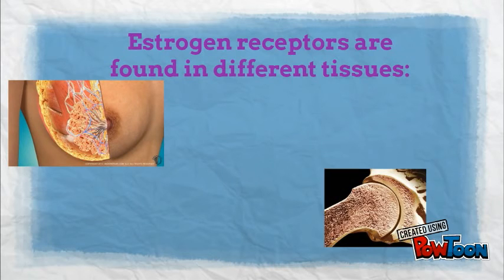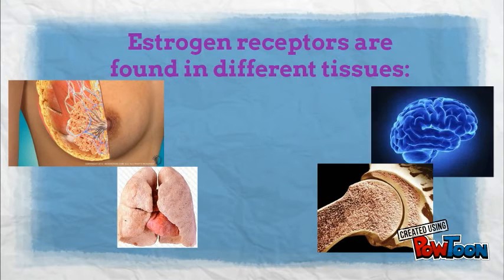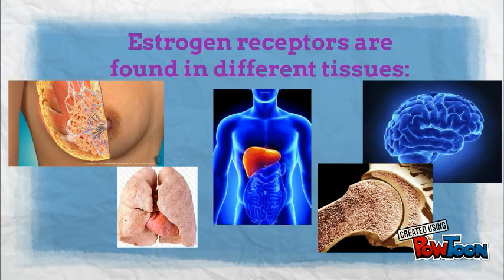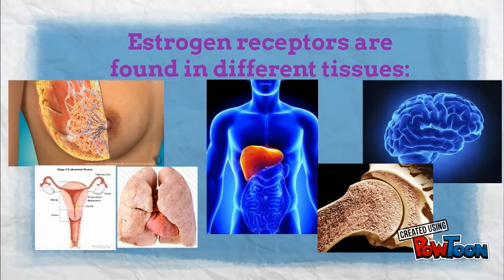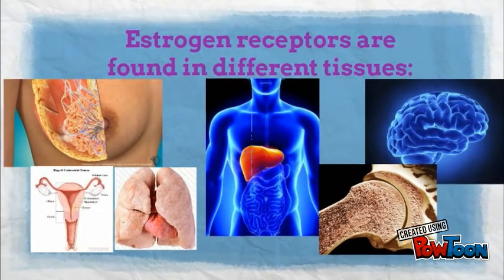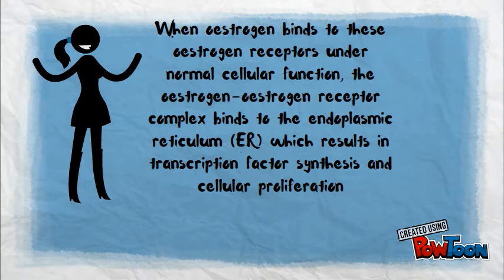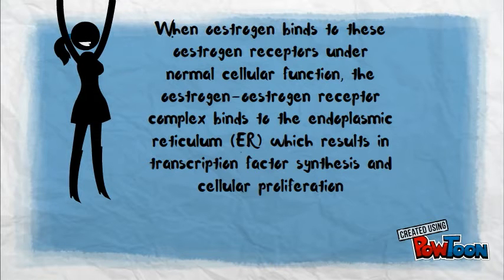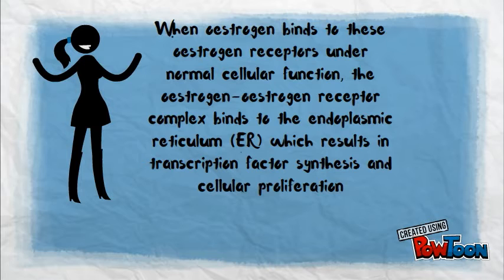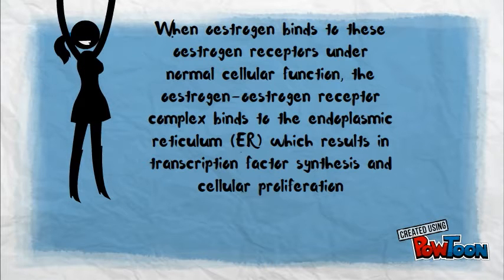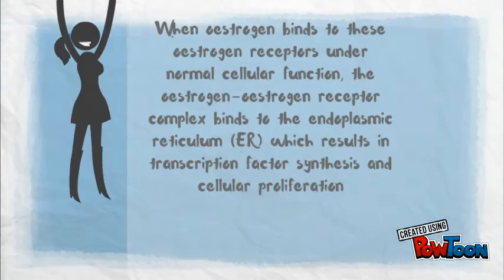Estrogen receptors exist in different tissues: breasts, brain, lungs, liver, bone, and uterus. When estrogen binds to these estrogen receptors under normal cellular functions, the estrogen-estrogen receptor complex binds to the endoplasmic reticulum, which results in transcription factor synthesis and cellular proliferation.